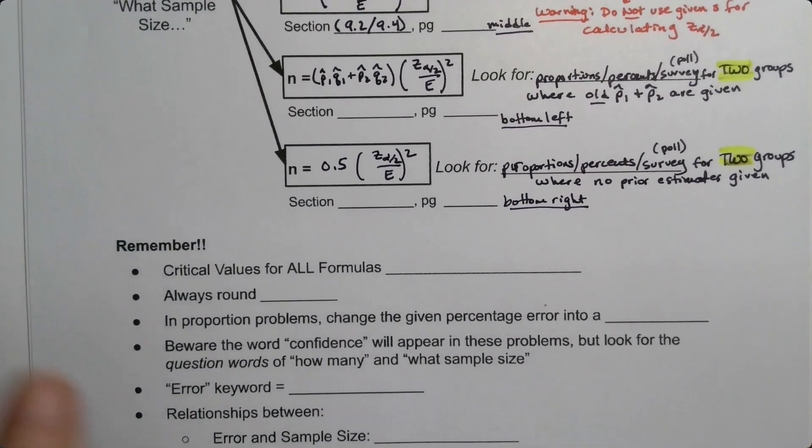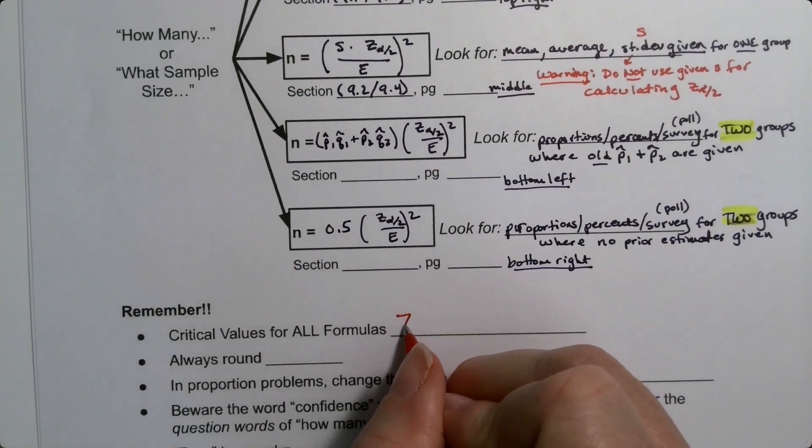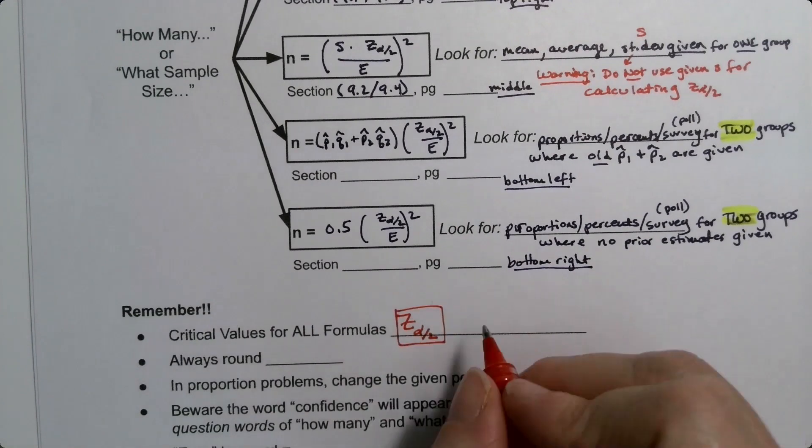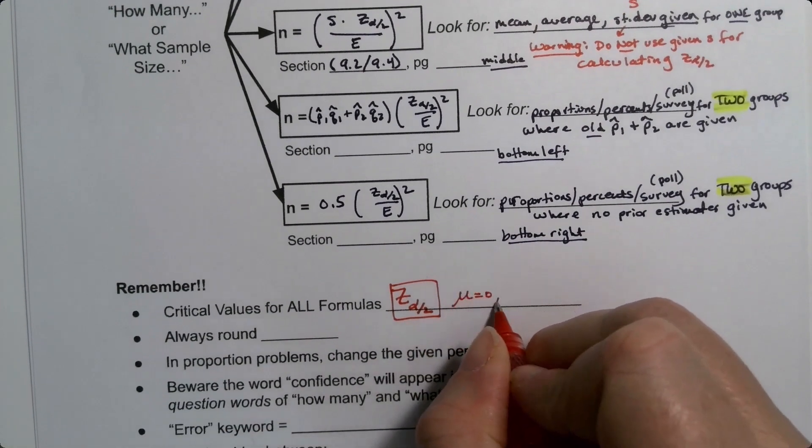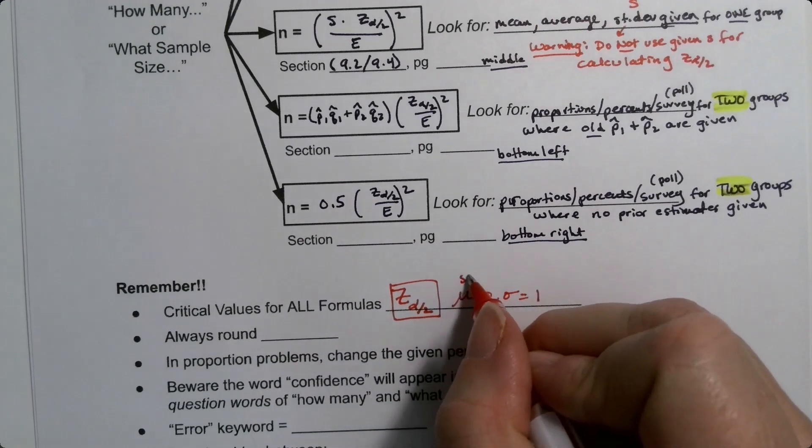The first bit is the part I've already been alluding to, that they all use the same critical value, which is z alpha over 2. Now, z alpha over 2 uses a mean of 0 and a standard deviation of 1, and we use stat calculation.